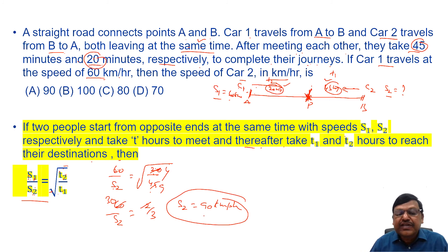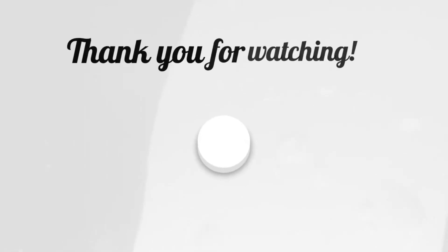So speed of the second car is 90 kilometers per hour, answer is choice A. So this is a very useful formula, otherwise we have to write a very lengthy solution for this. Thank you.